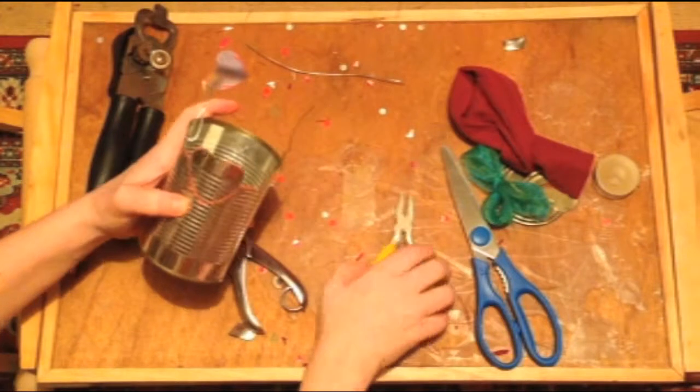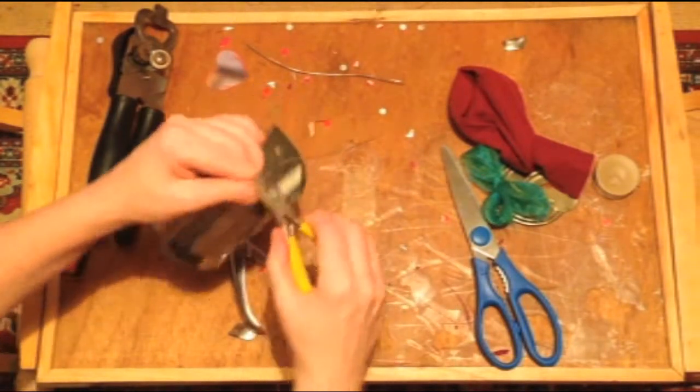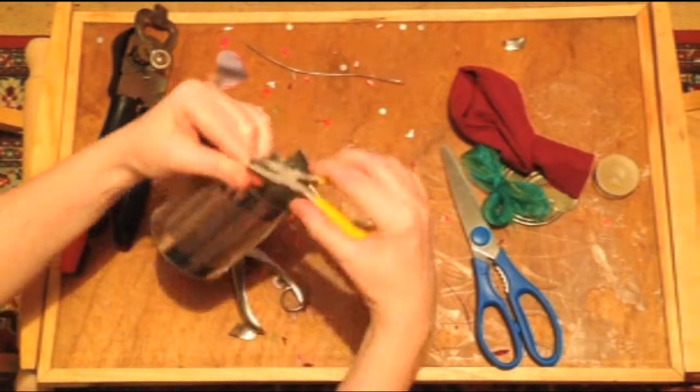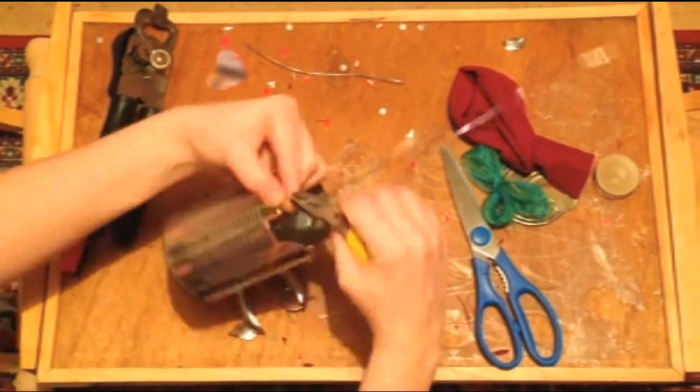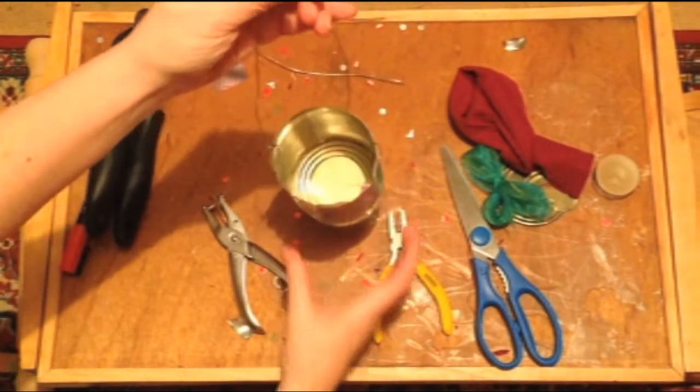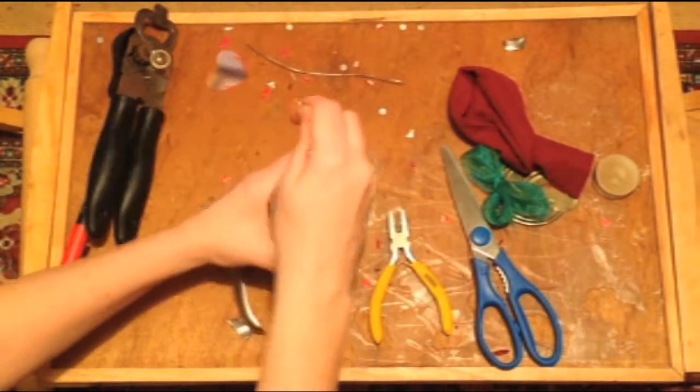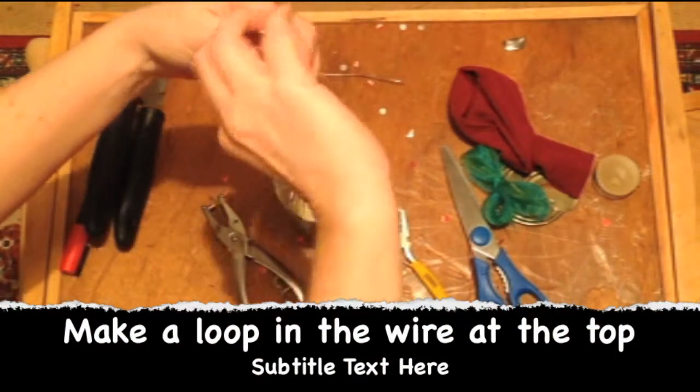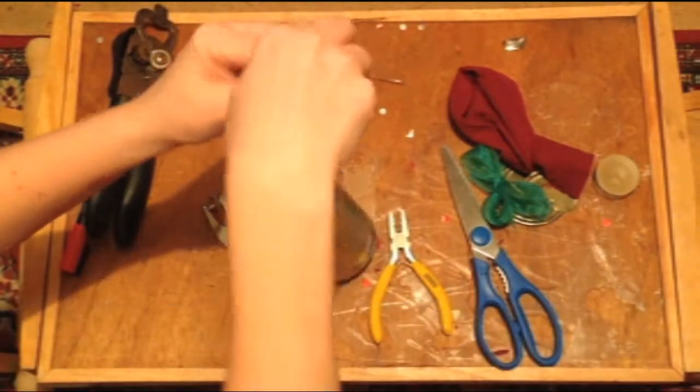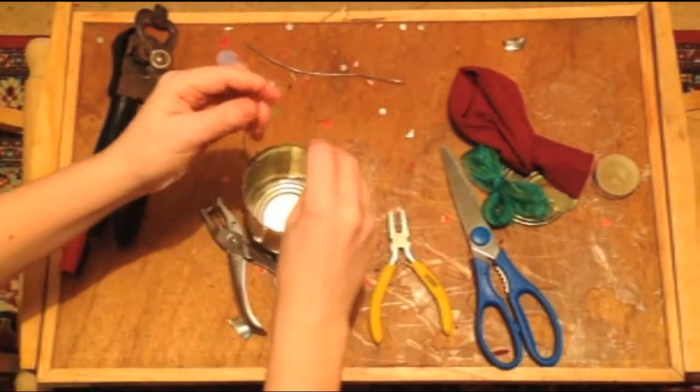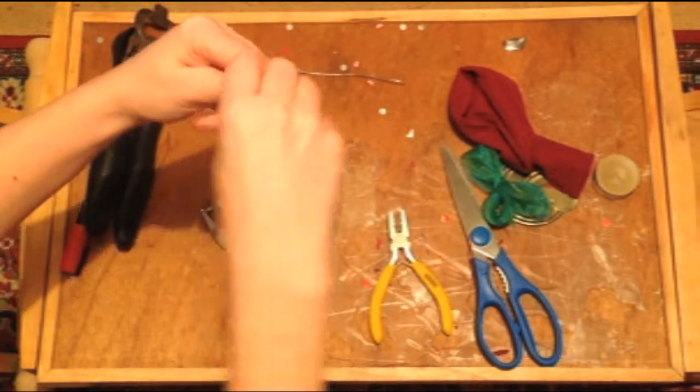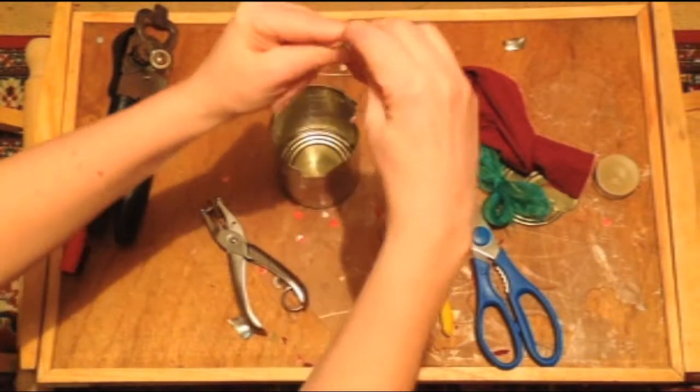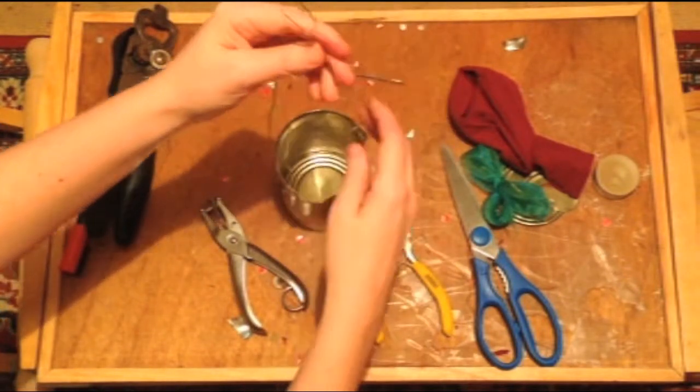So you would actually spend some time just wrapping it round, just going to speed this up. Okay, so now we've got our little hanging lantern piece and we'll just make a little bit of a loop at the top, just twisting the top just so you've got a little hanger there.